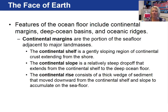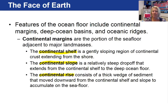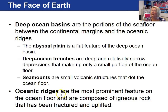The continental margin is the portion of the sea floor right next to the continent itself. If you were to walk out into the ocean, you would walk onto the continental shelf, then there would be a break of about 3 to 6 degree slope — what we call the continental slope — and then at the bottom of the continental slope we have the rise, which is slightly less steep than the slope. So along the margins we define areas as the shelf, the slope, and the rise.